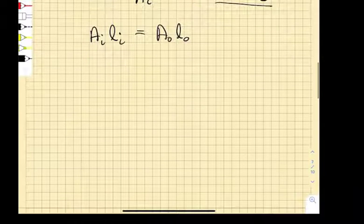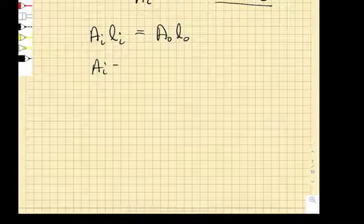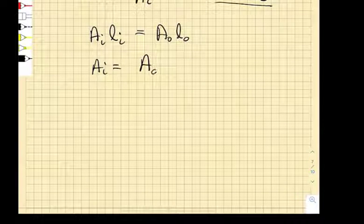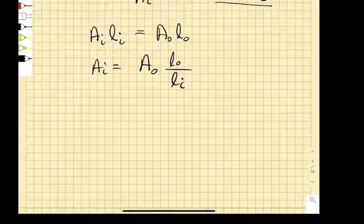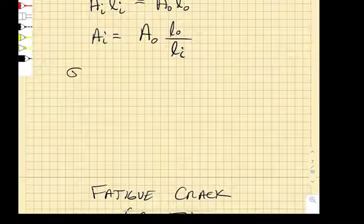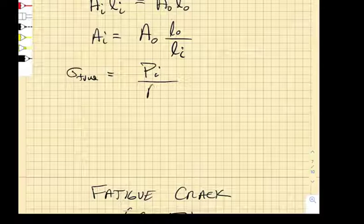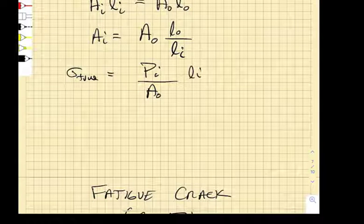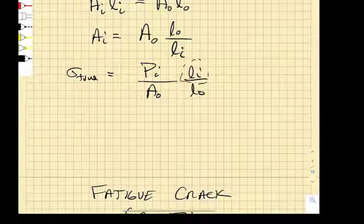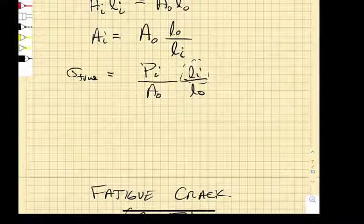So that instantaneous area is equal to A0 times L0 divided by LI. Right, so what does that do for us? So that means that the true stress is going to be equal to the instantaneous load divided by A0 LI over L0. But what is LI? LI is the instantaneous gauge length.